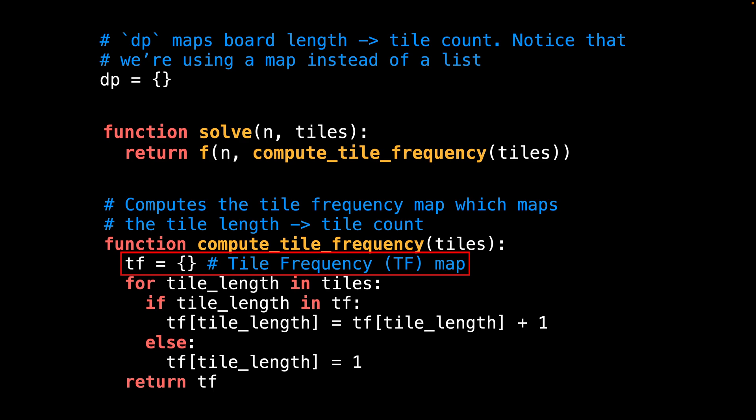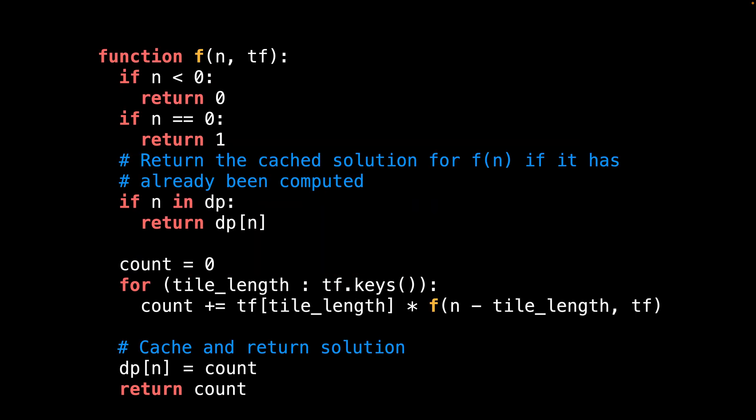First, we declare a map called TF, short for tile frequency, which maps the tile length to the number of tiles of that length. Then we do a simple loop through the tiles and compute the frequency for each tile length.